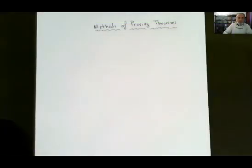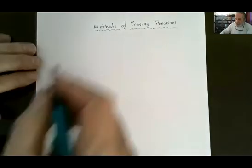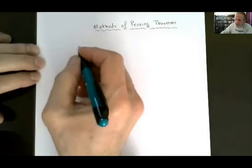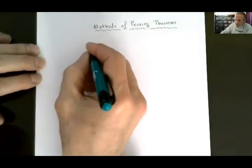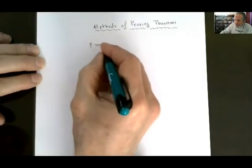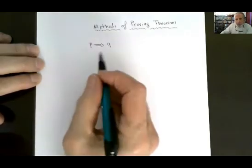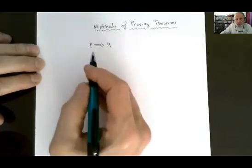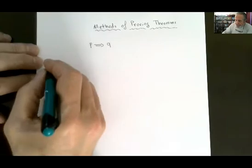Hello and welcome. Methods of proving theorems. Any theorem or proposition can be written in the form p implies q. We say p implies q, or we say if p then q. Today we are going to discuss the direct proof.